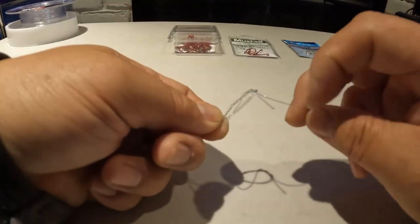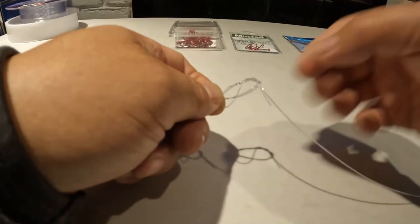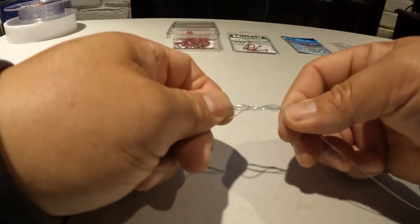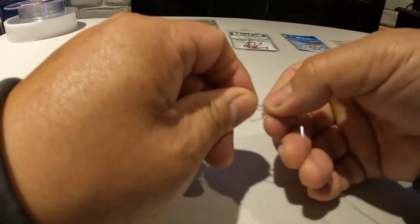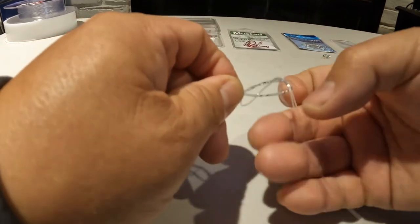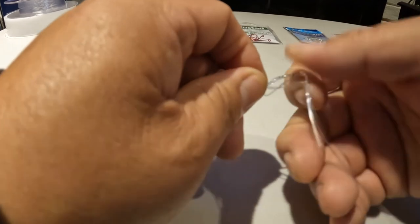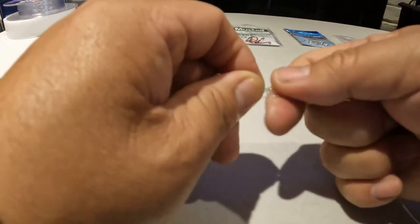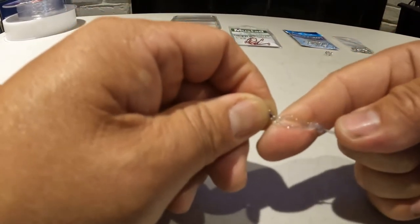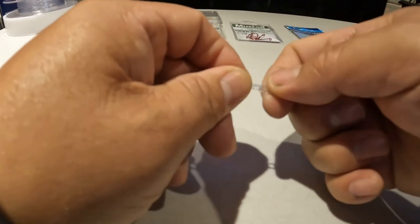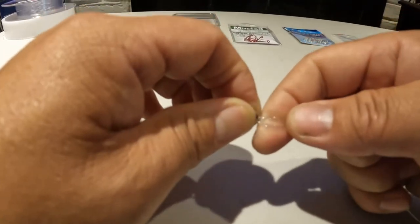And with this end, with the tag end and the main line or the leader line, you're going to slowly cinch down. Some people use saliva to kind of lube this to make it easier. You can use water, I don't really like to use the saliva, so I just kind of take my time and slowly do this so the line don't burn.